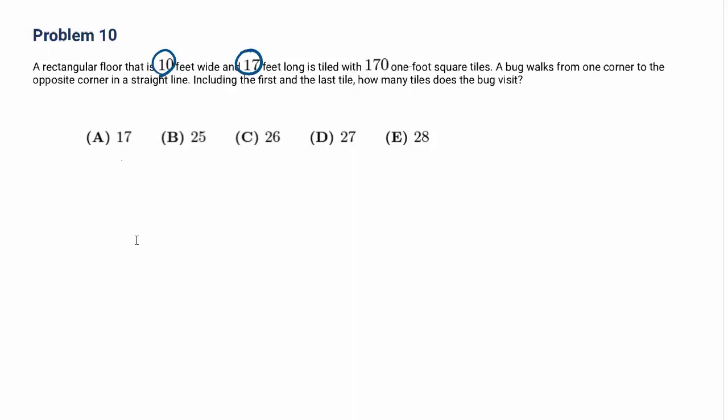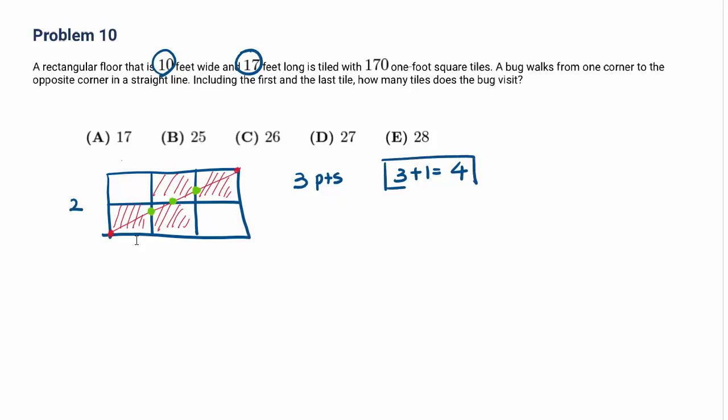Suppose this is an even number 2 and this is 3. I'm going to try something. So I have a diagonal like that. First and last points. Inside, how many intersections with vertical or horizontal lines? We have one point, two points, three points. When you have three points, how many tiles can the bug cross? One, two, three, and four. So actually, if we have three point intersections, the number of tiles will be 3 plus 1 is 4. That's the formula.